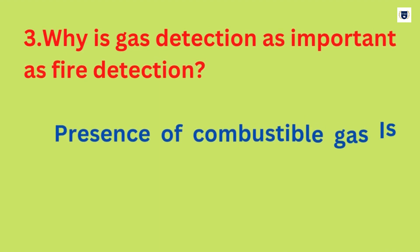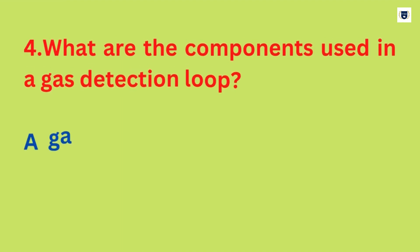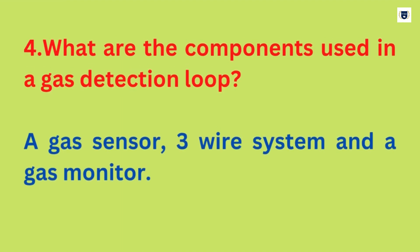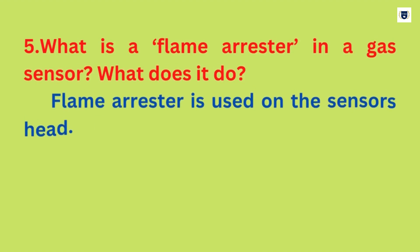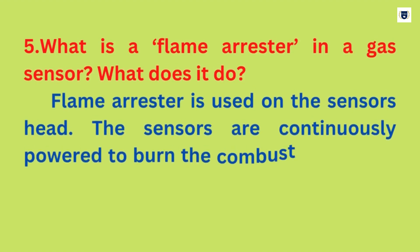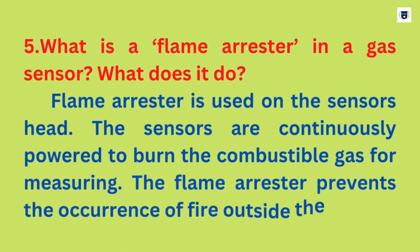Why is gas detection as important as fire detection? The presence of combustible gas is the first stage of a possible occurrence of a fire. What are the components used in a gas detection loop? A gas sensor, a three-wire system, and a gas monitor.